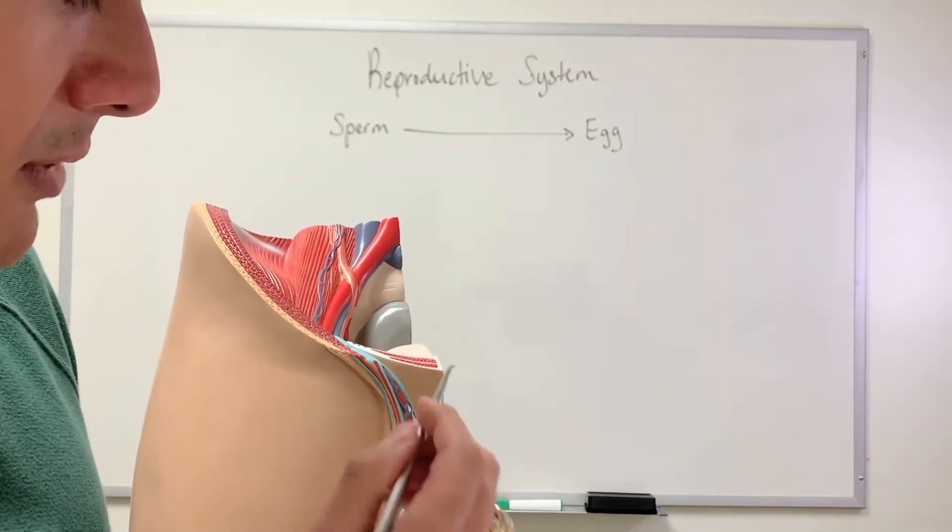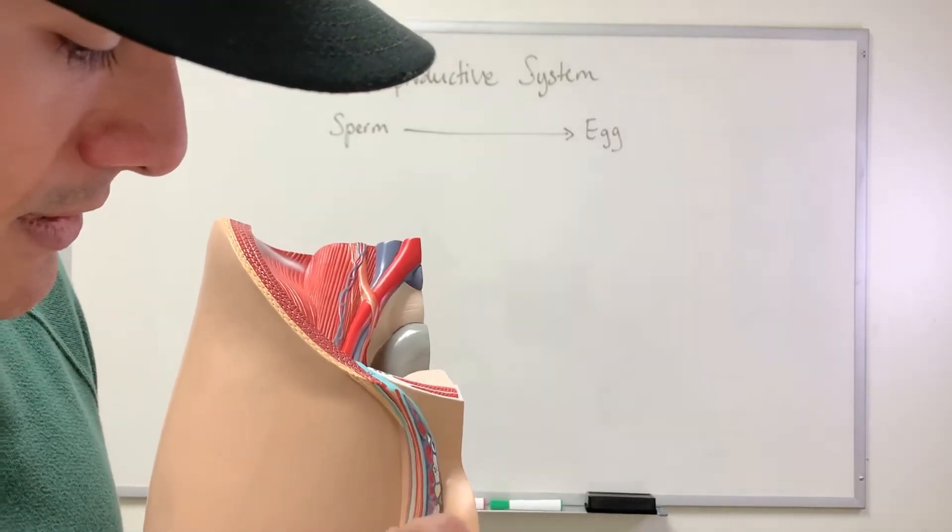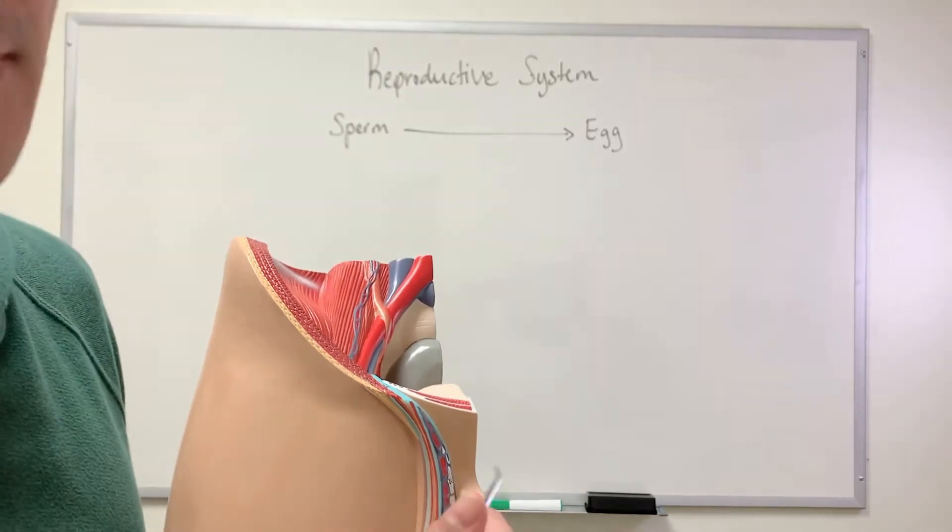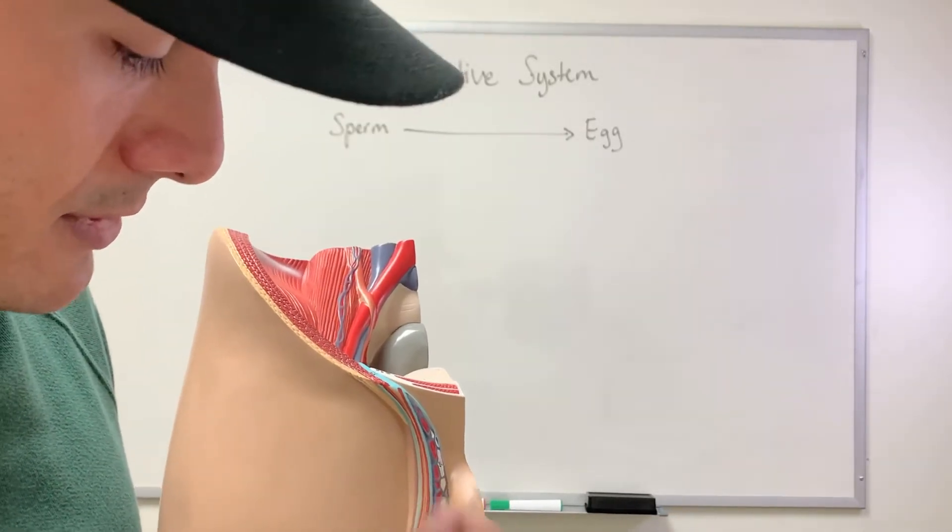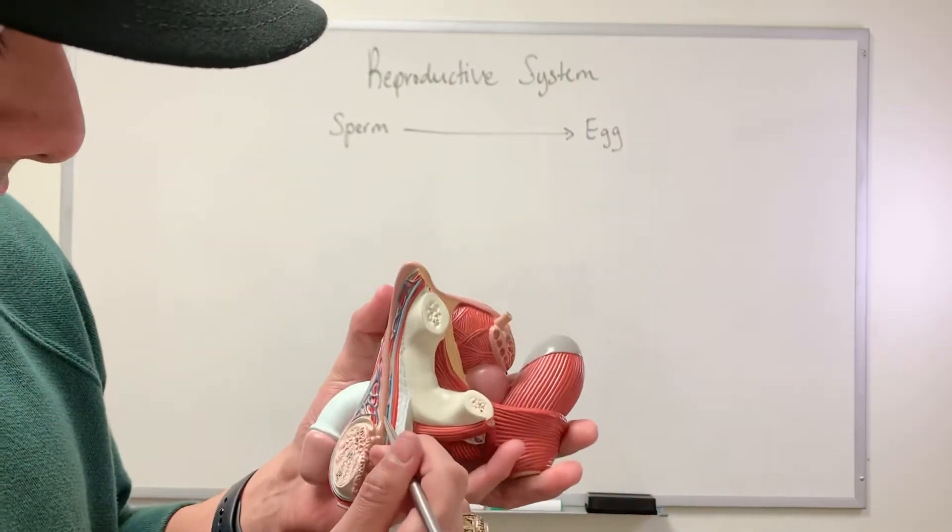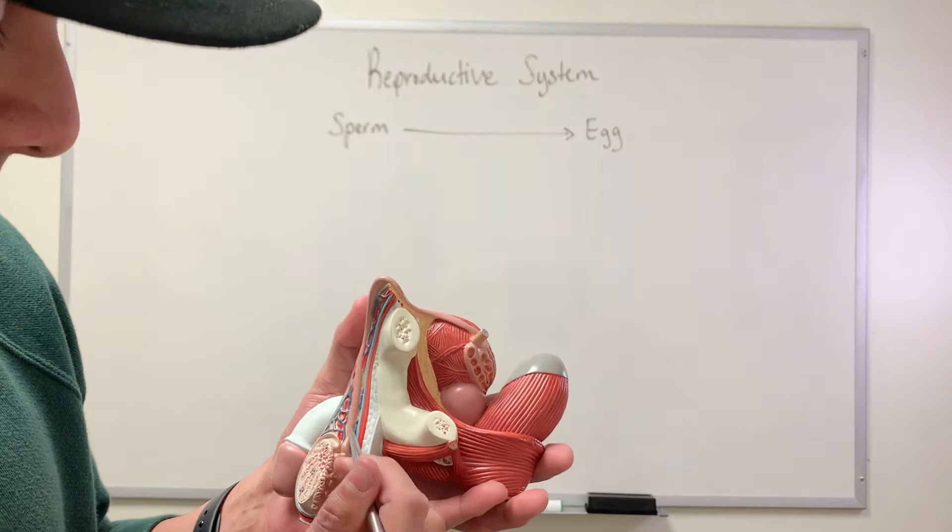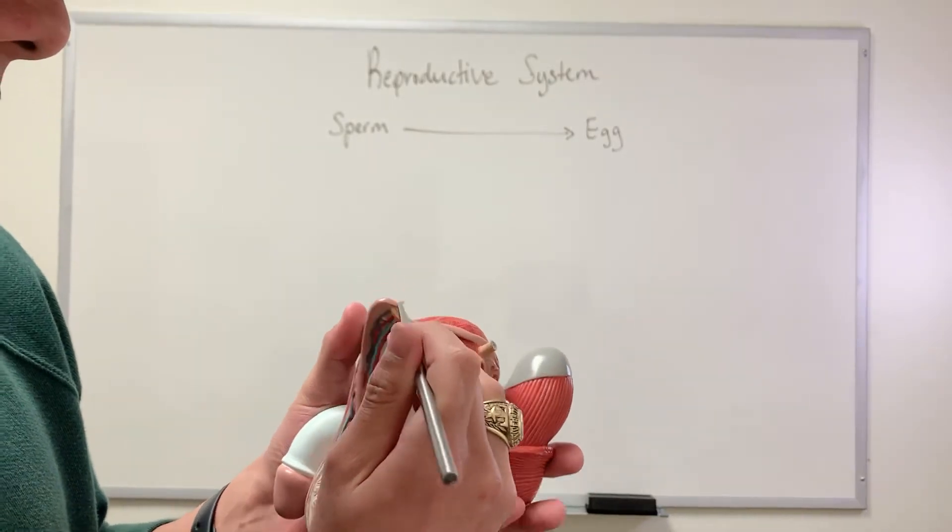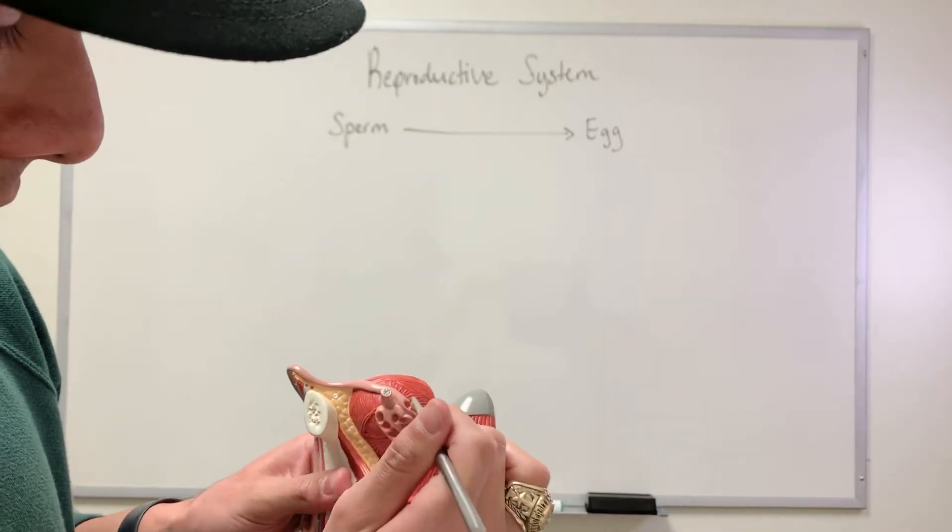But then the other thing I want to point out here is this is what's known as the spermatic cord. So the spermatic cord contains the vas deferens and then all of the different vasculature that helps to supply the blood to the testes. So this here is the vas deferens. So the sperm, it's maturing here at the epididymis, it goes up through the vas deferens, goes around here, and then it gets to this point.